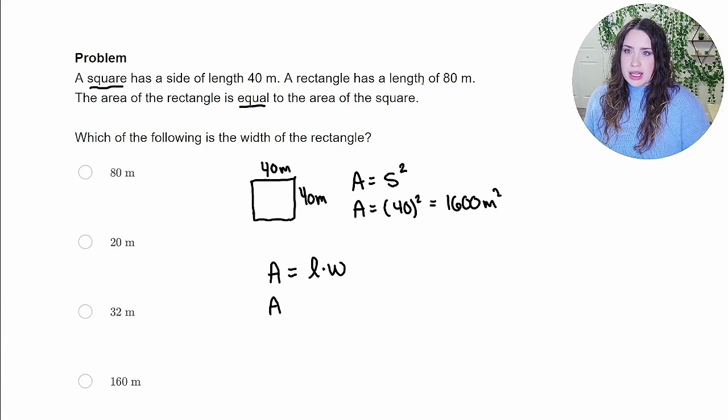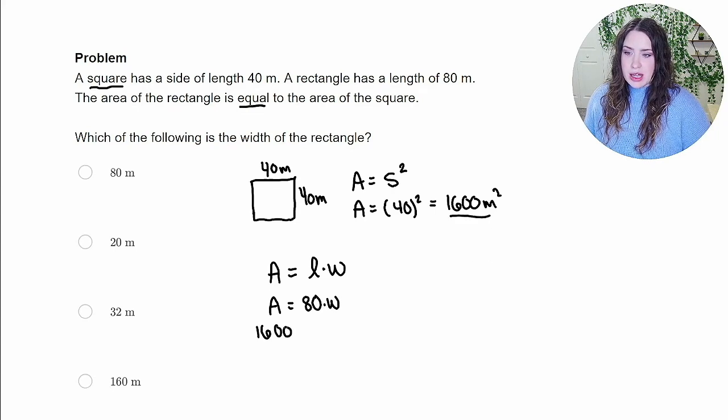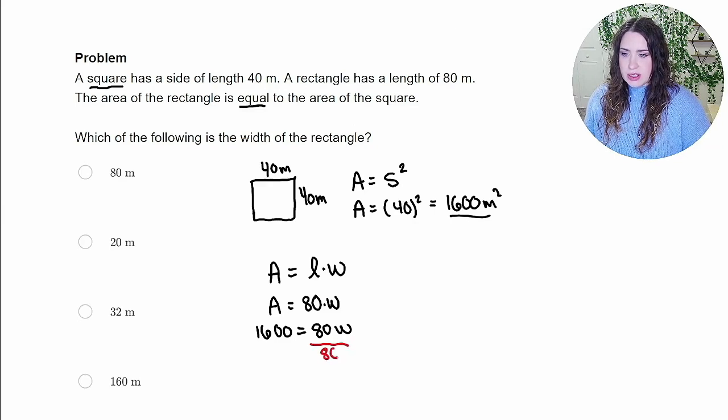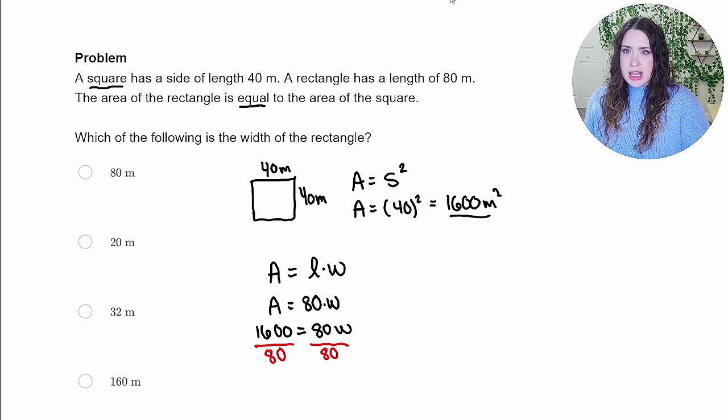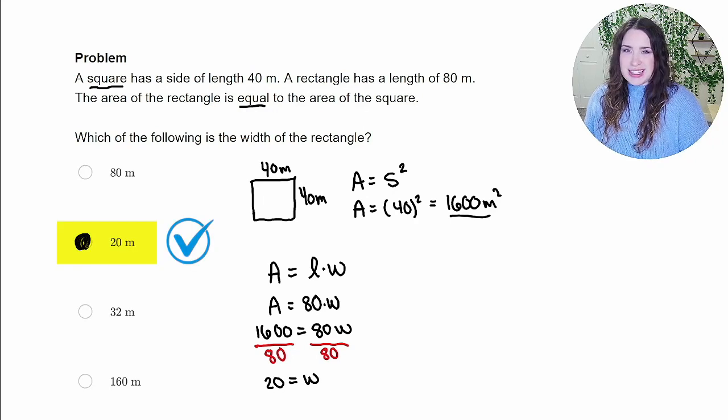And we can plug in that the length is 80, and we're trying to figure out what the width is. And we can also go ahead and plug in that 1,600 for the area because that's going to be the area of our rectangle as well. So then to solve for the width, all we need to do is divide both sides of this equation by 80 and do 1,600 divided by 80, which is going to leave us with 20 meters for our width, which is the correct answer right here.